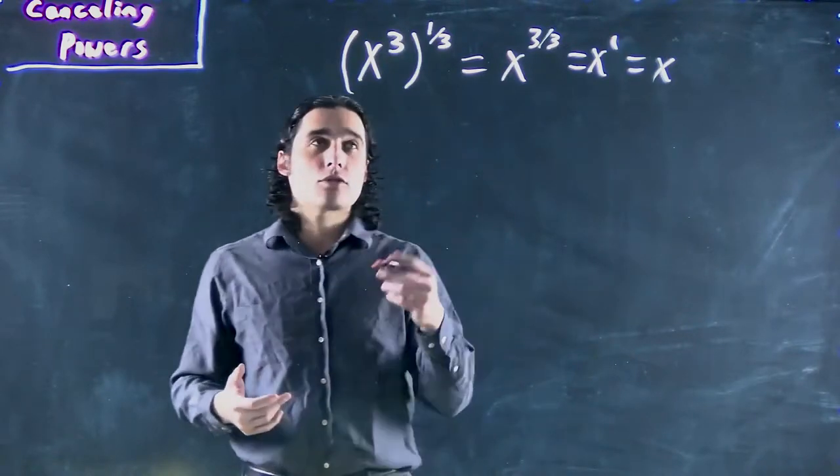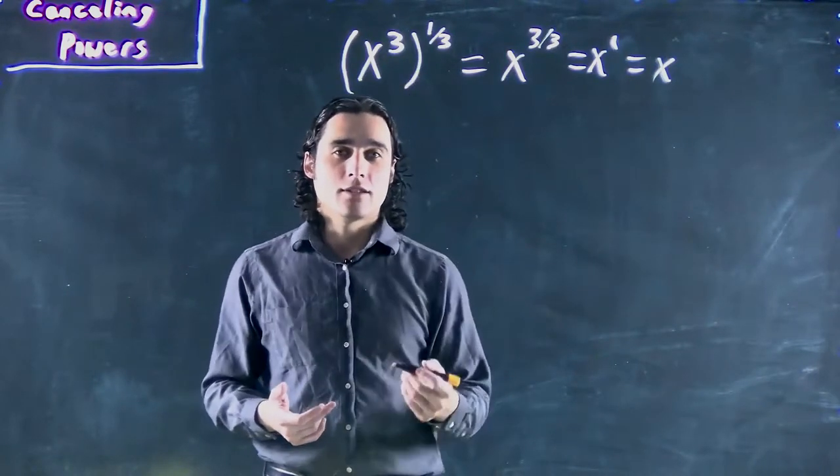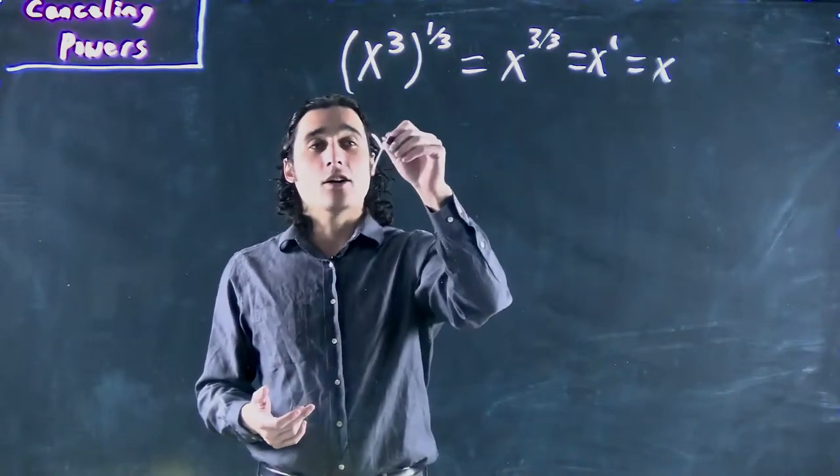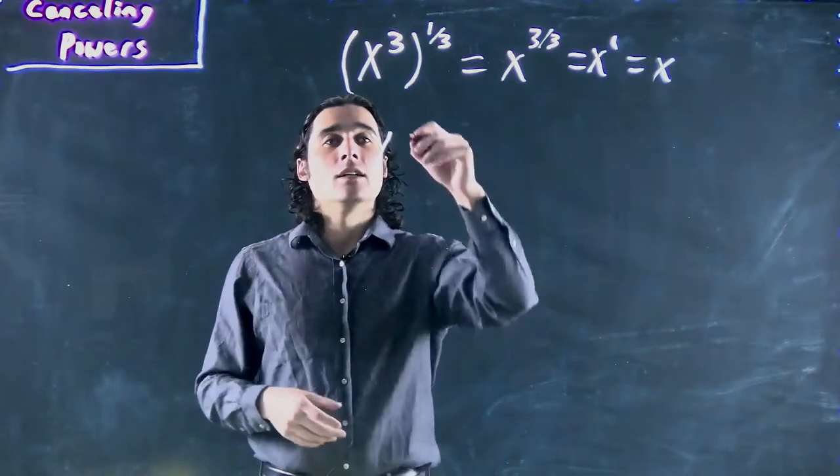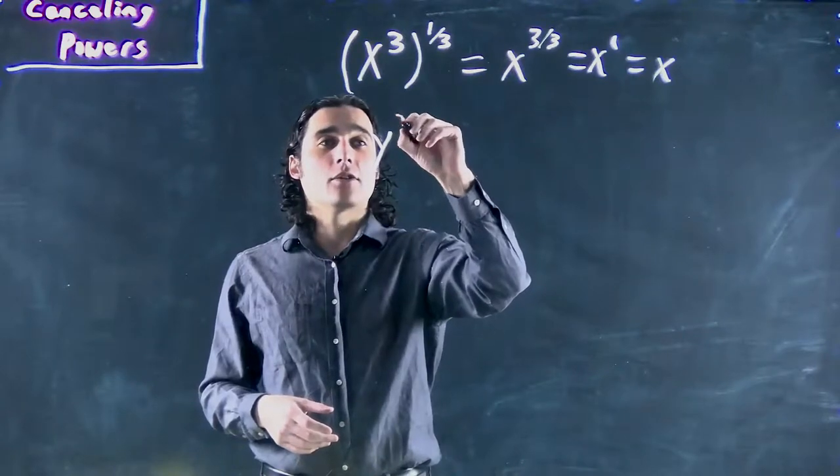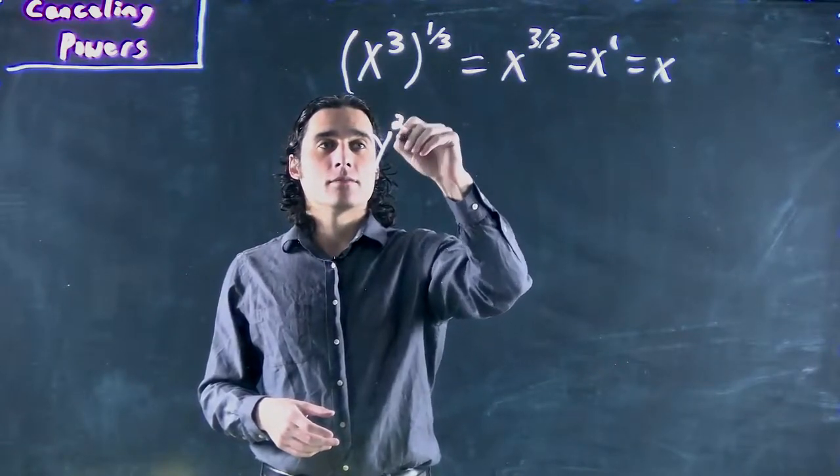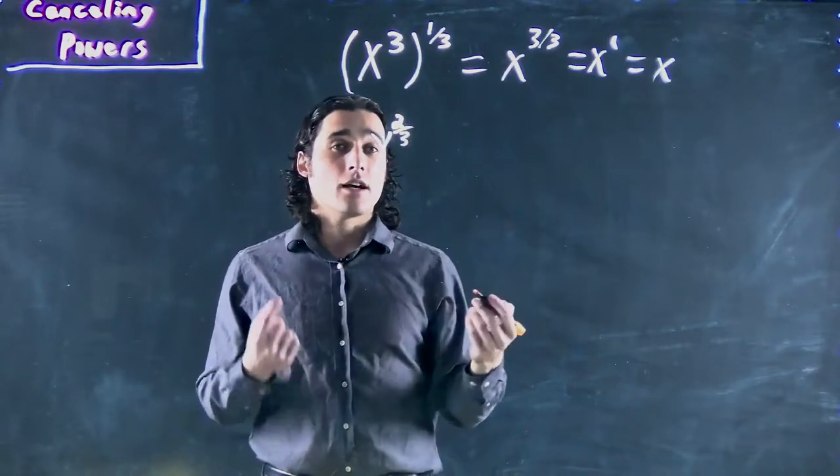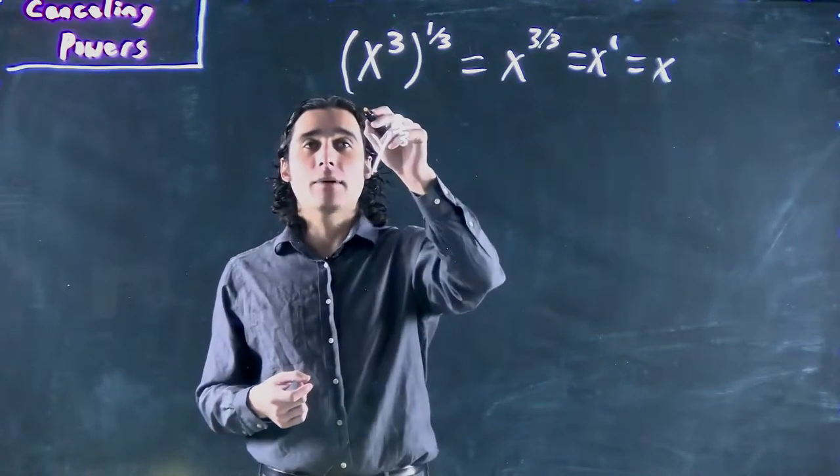And this holds true no matter what the power is. I could have y, also doesn't matter what the base is, of course, any variable. If I had y to the 2 thirds, if I want to get rid of it, multiply by the inverse.